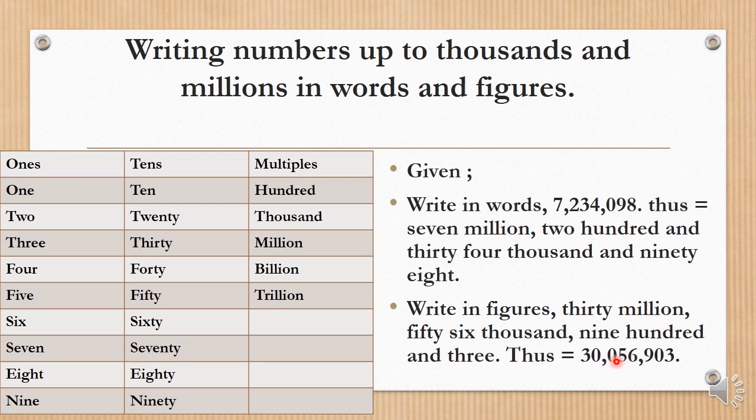Nine hundred and three. Nine hundred and three, absence of tens gives the zero here. Do you understand? You can replay this video to understand better.